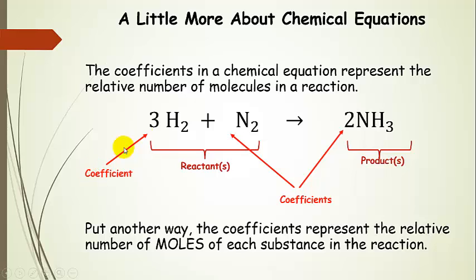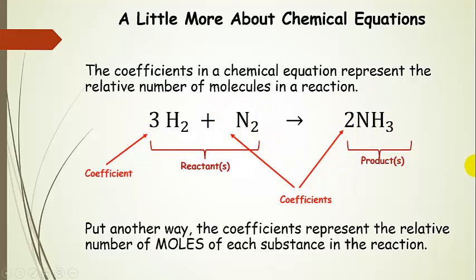We've also talked about these coefficients in terms of molecules. It takes three molecules of hydrogen gas with one molecule of nitrogen to produce two molecules of ammonia, for instance. Now we have the mole concept, so we can look at this chemical reaction in a slightly different way. We're going to say it takes three moles of hydrogen gas and one mole of nitrogen to produce two moles of ammonia.